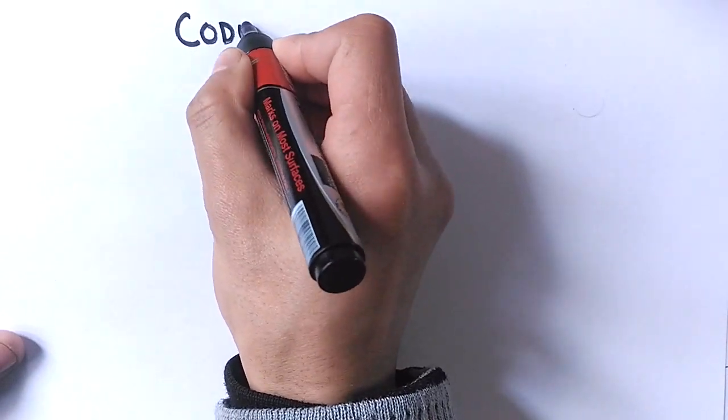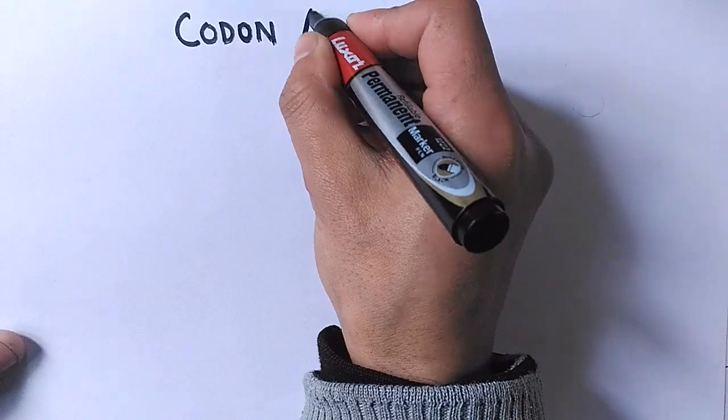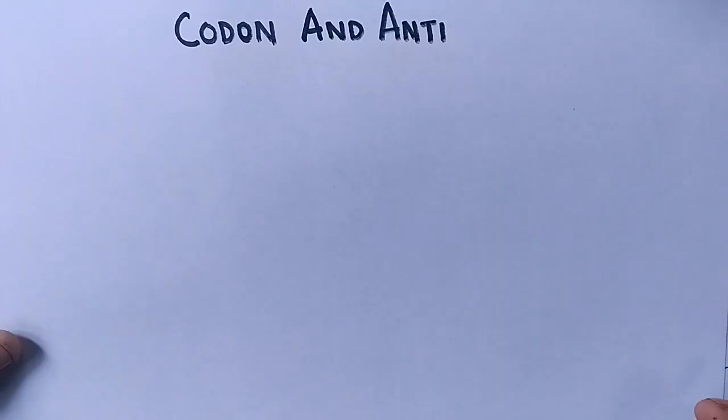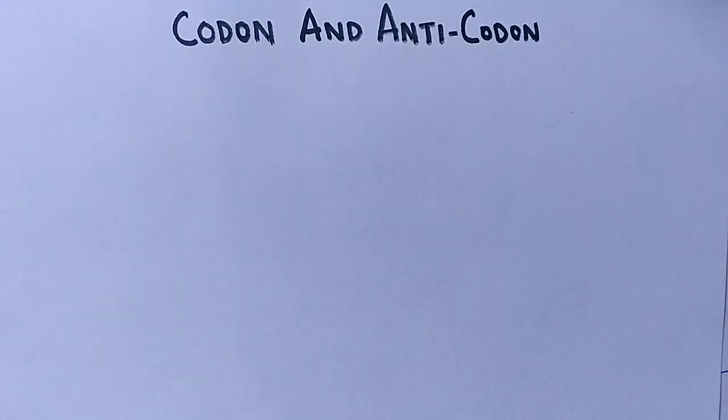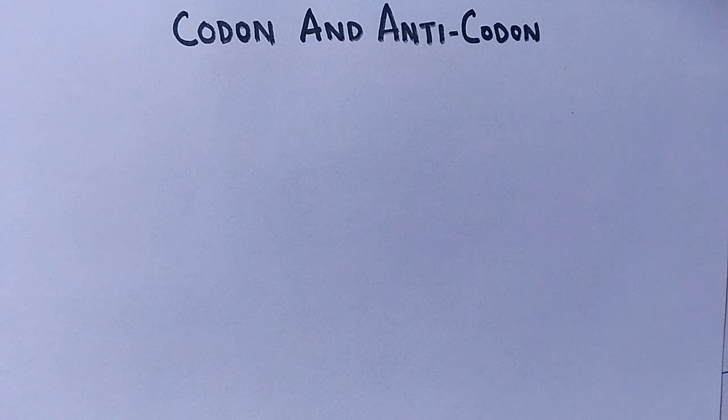We always use the terms codon and anticodon at the end of gene expression, at the time of translation, when we discuss the translation process or the molecular structure of tRNA and mRNA molecules. So what do these terms actually denote? We'll be discussing codon and anticodon in this lecture.